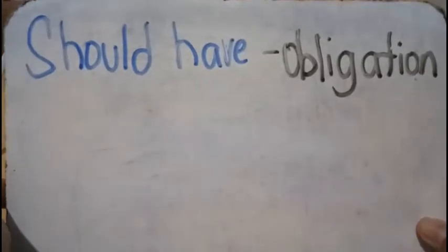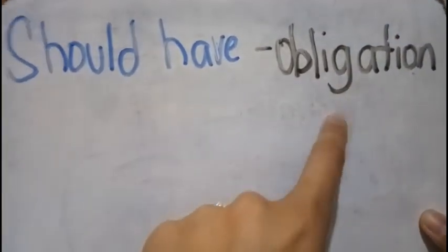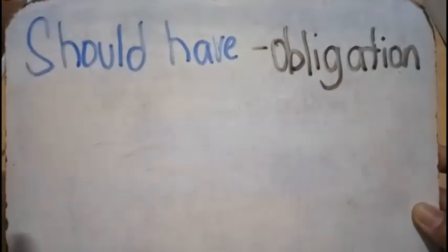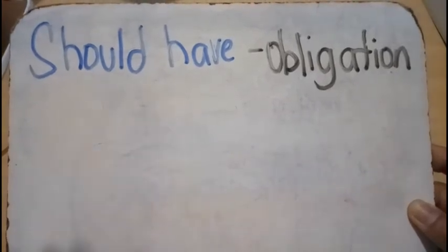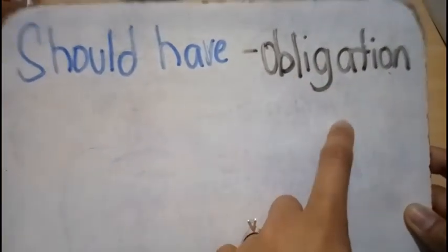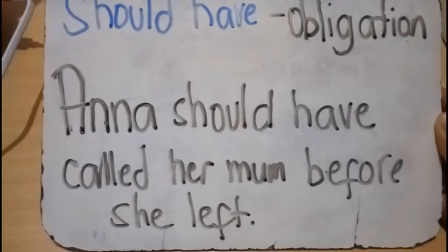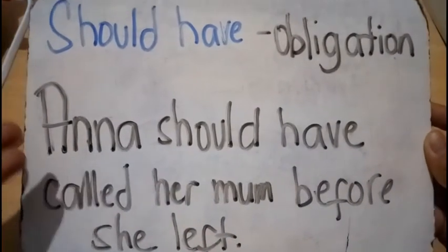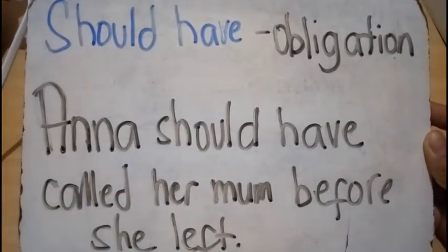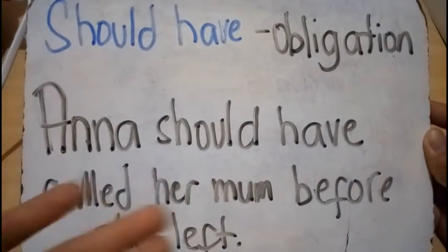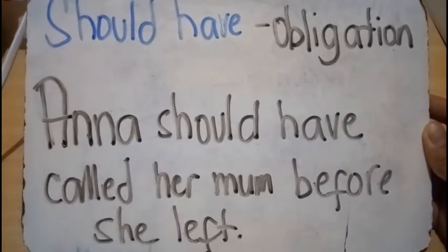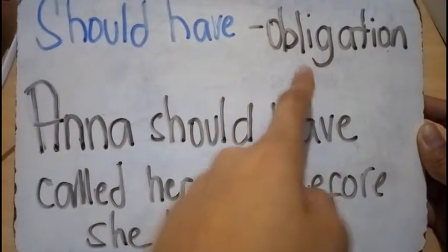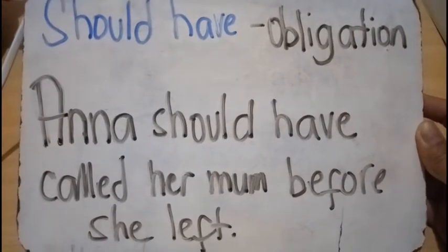Next we have should have. We use should have when we show an obligation or something that needs to be done — referring to a past event. Example: 'Anna should have called her mom before she left.' The obligation here is that Anna should have called, but it didn't happen. We use should have because we are showing an obligation.